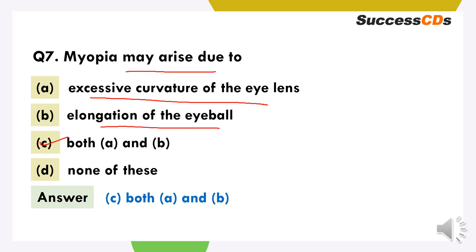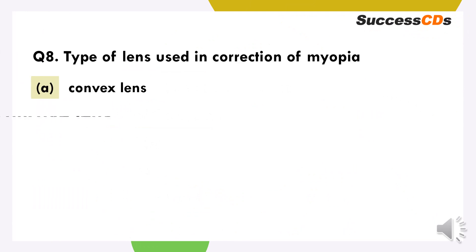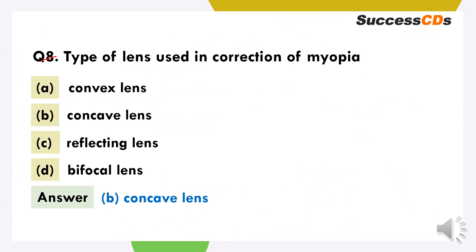The next question is about the type of lens used in correction of myopia. Myopia ke patients jo ki nearby objects ko clearly dekh pate hai par dur ki objects ko unclearly dekh pate hai — aise patients ko concave lens use karna hota hai. So the correct option is concave lens.